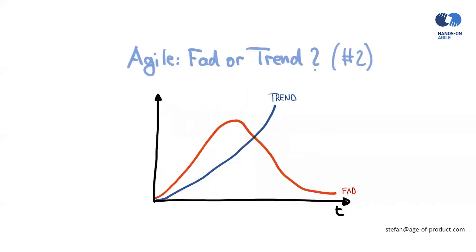Number two: is Agile a fad or a trend? This is rather closely related to the problem with not having a vision. If you're not having a vision, your leadership will very likely not fully support an agile transition. And this is the issue — the leadership, the C-level, has a role model function from my perspective.